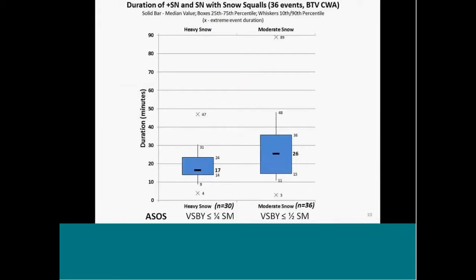As far as the duration of the individual events, these are box-and-whisker plots showing the length of time the heavy snow and moderate snow lasted. Consistent with our subjective experience, the heavy snow typically lasted around 17 minutes for the median — the box portion represents the interquartile range, or middle 50% of the data set — with heavy snow between 14 and 24 minutes in length. For the moderate snow at the ASOS sites, the median length of time was 26 minutes, and the interquartile range between 15 and 36 minutes. This dovetails with our subjective experience as we see snow squalls come through with frontal boundaries.